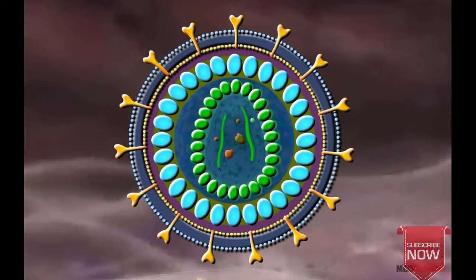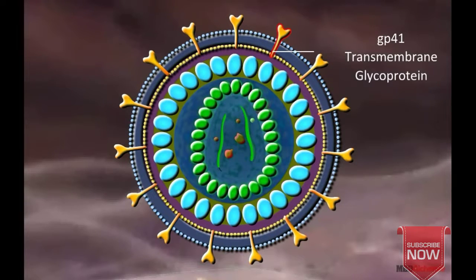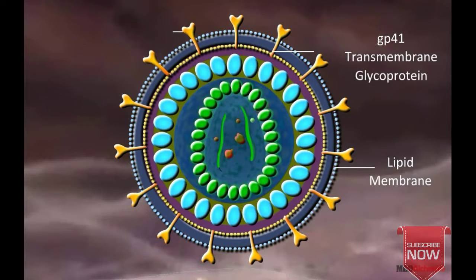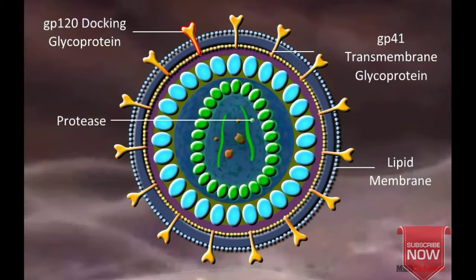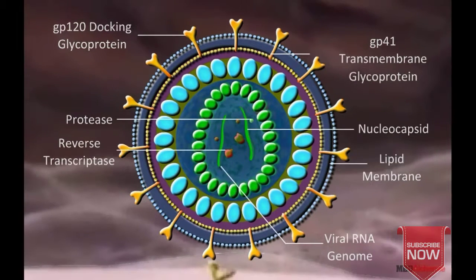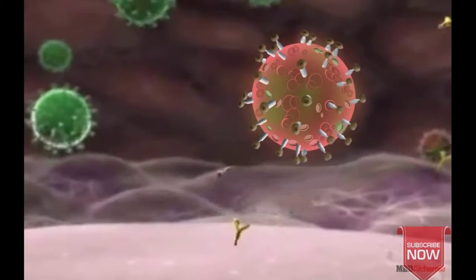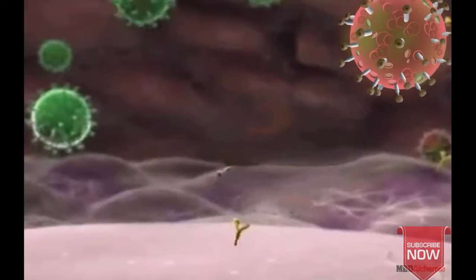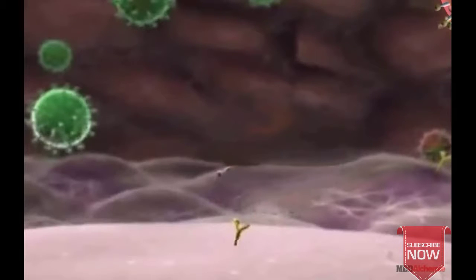Two glycoproteins are also associated with these lipid layers. One type of glycoprotein is known as GP41, which lies within the lipid membrane, and another called GP120 extends beyond the lipid layers, forming the second layer. The protein core encloses a central core of viral RNA. These are two molecules of RNA associated with the molecules of enzyme reverse transcriptase.